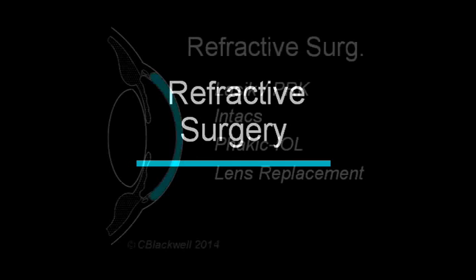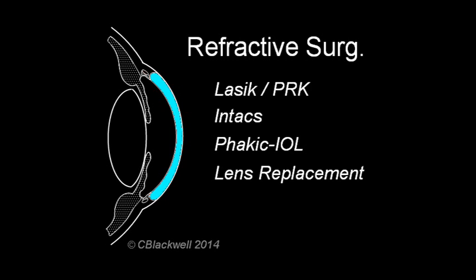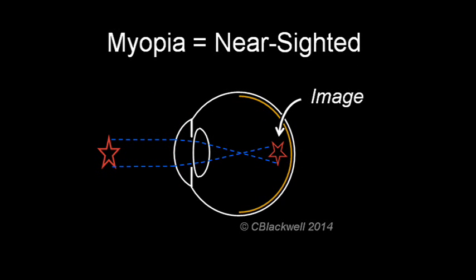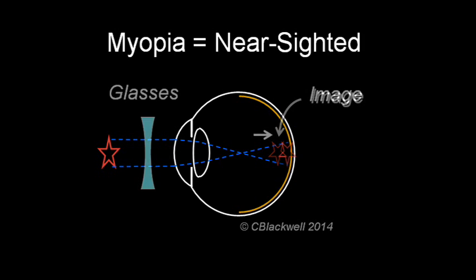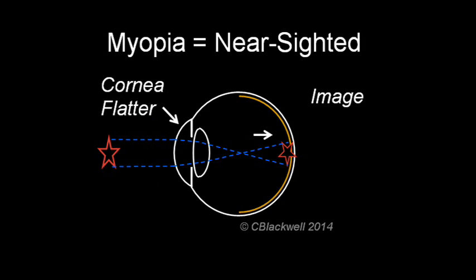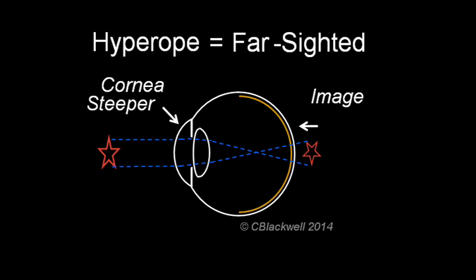Now we move to a different ballpark: refractive surgery, whose aim is simple — to get rid of glasses. There are multiple ways to approach this problem. In myopia, or nearsightedness, the image is formed in front of the retina and is out of focus. That could be corrected by a glasses lens, or alternatively by making the cornea flatter, which also moves the image back to the retina. Hyperopia, or farsightedness, could be corrected by making the cornea steeper, but that is more difficult to accomplish.